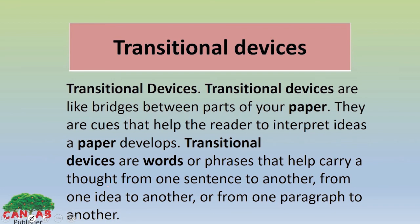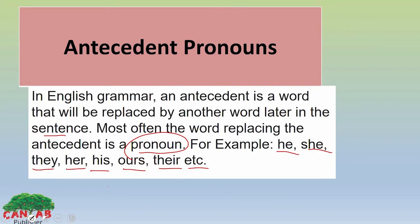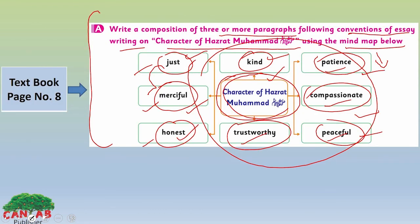You need to understand the transitional devices — sentences and phrases that relate ideas to one another. Learn the examples of transitional devices, which you can also find in your textbook. Learn the antecedent pronouns as well; you can find antecedent pronouns on textbook page number four. For your writing task, you need to write three paragraphs: introductory, main body paragraph, and conclusion.